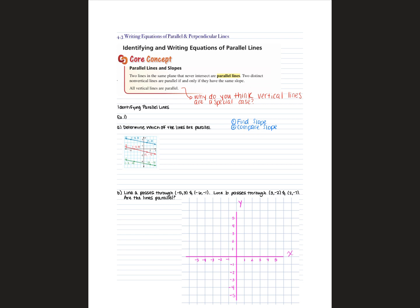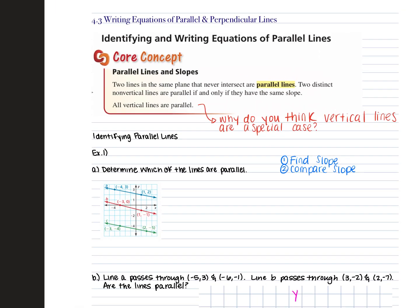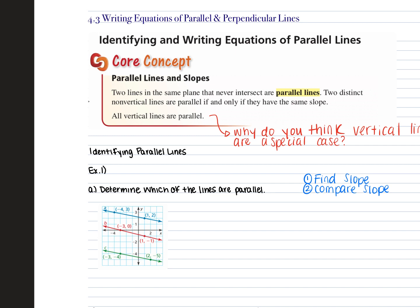4.3, we're going to be writing equations of parallel and perpendicular lines. It's important to know that when two lines are parallel, they have the same slope. Parallel lines never intersect — they look like two lines that keep continuing in the same direction but will never cross.